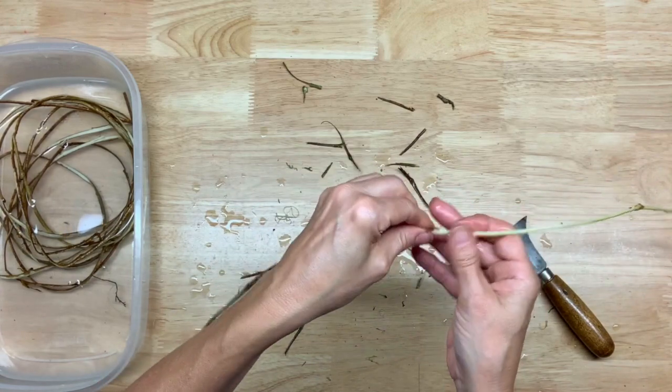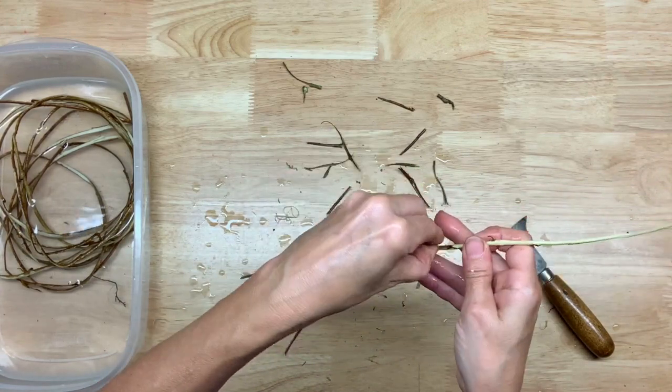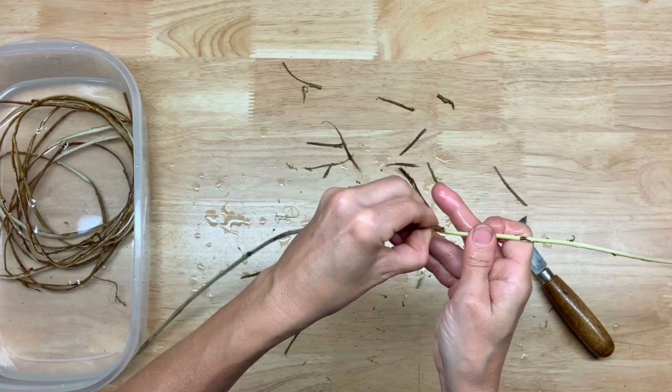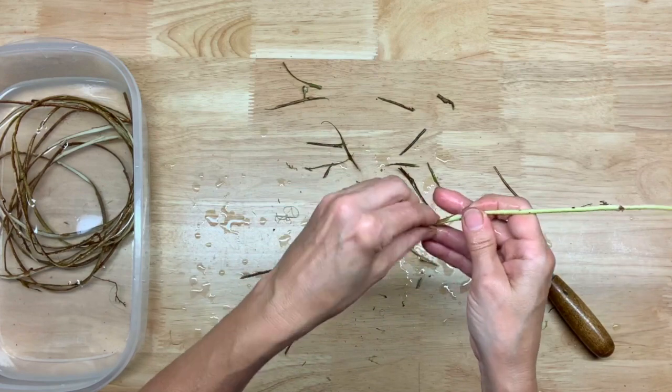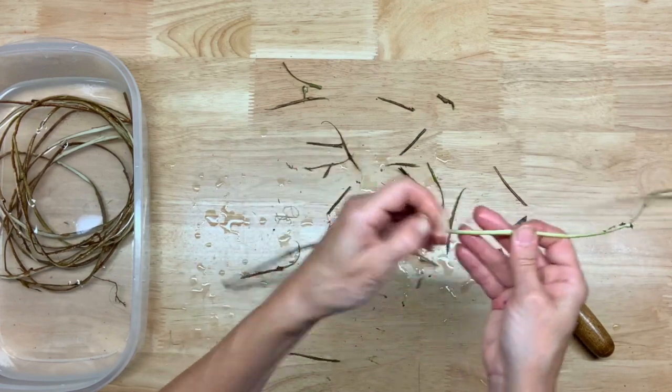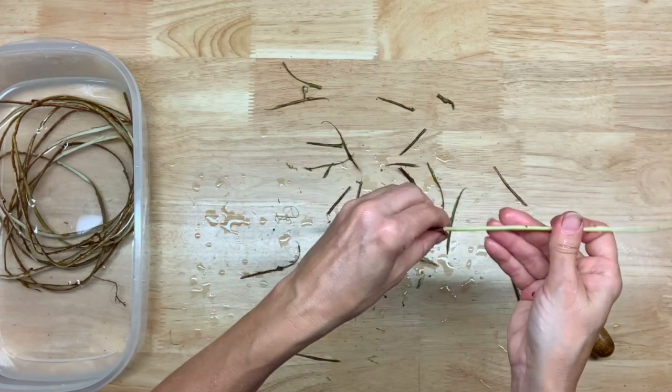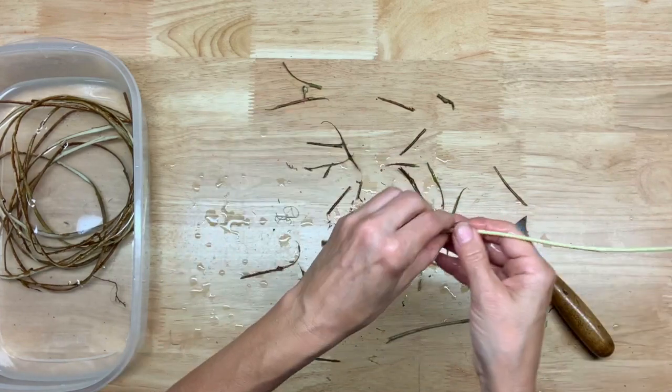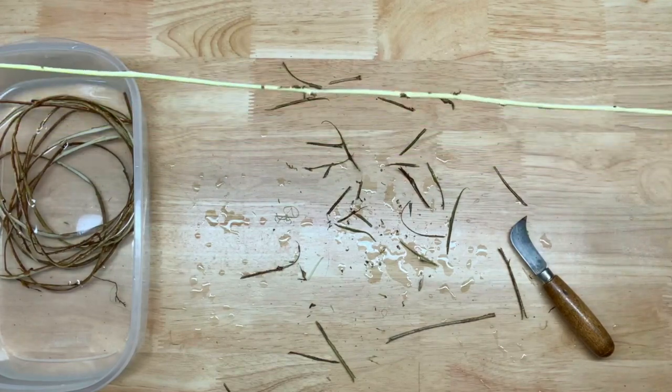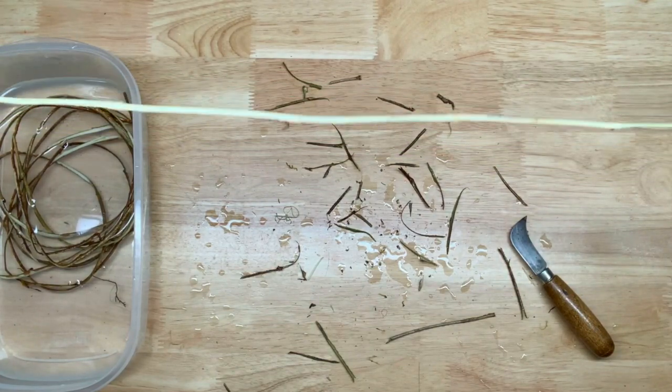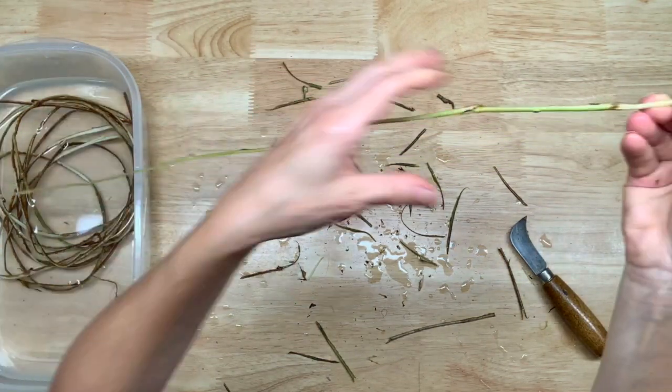If that's not working, I've also heard hot water works - dip it in hot water for 10-15 minutes and see if the bark's easier to peel off. This is very labor-intensive, there's no way around it, but you have to enjoy doing it. I can sit and do it for hours. There we go, there's a length of peeled English ivy.